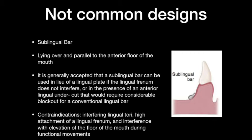The sublingual bar also looks like a bar, but its location is closer to the mouth floor — it lies over and parallel to the anterior floor of the mouth. Because of its location, contraindications include patients with a lingual torus, high attachment of a lingual frenum, or a mouth floor that easily creates interference. When designing a sublingual bar, you must be very careful about its location because any interference with the oral environment will affect the stability of the removable partial denture — this is why it is not a common design.